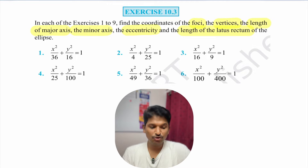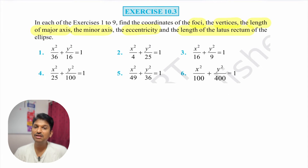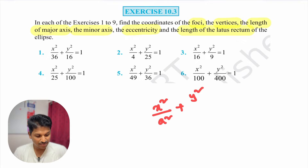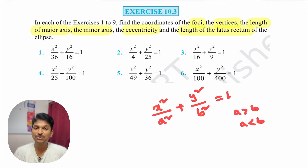In this class, we are going to do exercise 10.3 problems. There are total 6 questions here, and these are all equations of ellipse. The equation of ellipse is x² / a² + y² / b² = 1. There are 2 types of ellipse: one where a is greater than b (standard form), and another where a is less than b. If you know all the formulas related to these 2 types, you can understand these problems very easily.